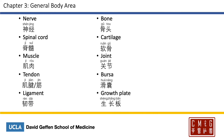To describe the different anatomical structures, you may want to say these terms. Nerve will be 神经, spinal cord 脊椎, muscle 肌肉, and tendon 肌腱 or 筋. Ligament is 韧带, and the bone 骨头 or simply 骨. Cartilage is 软骨; 软 meaning soft. Joint is 关节, and the bursa 滑囊. The growth plate is 生长板. This is of course not a complete list, and you can refer to our workbook for something more comprehensive.